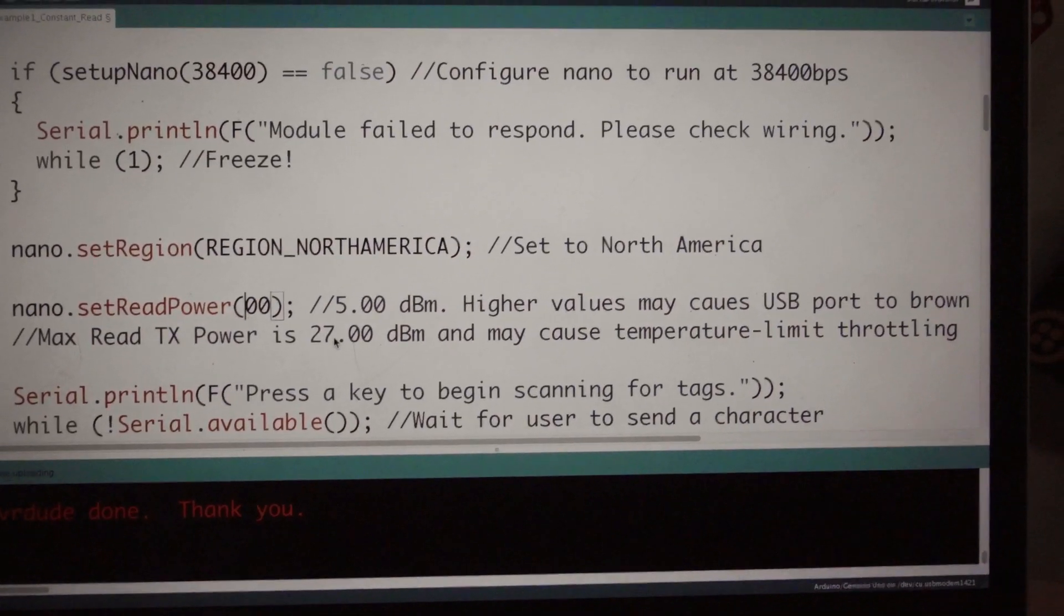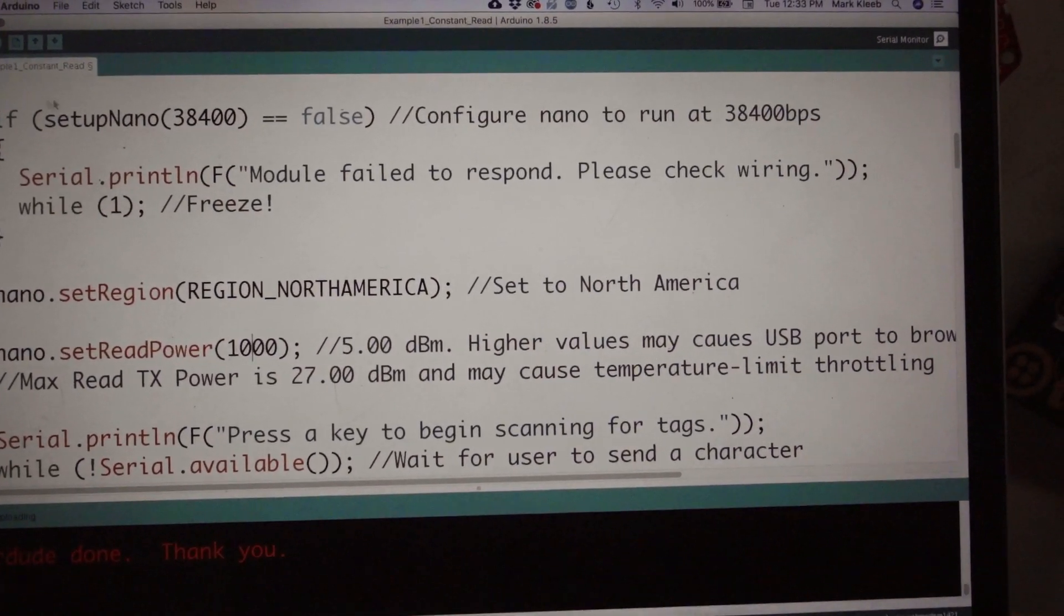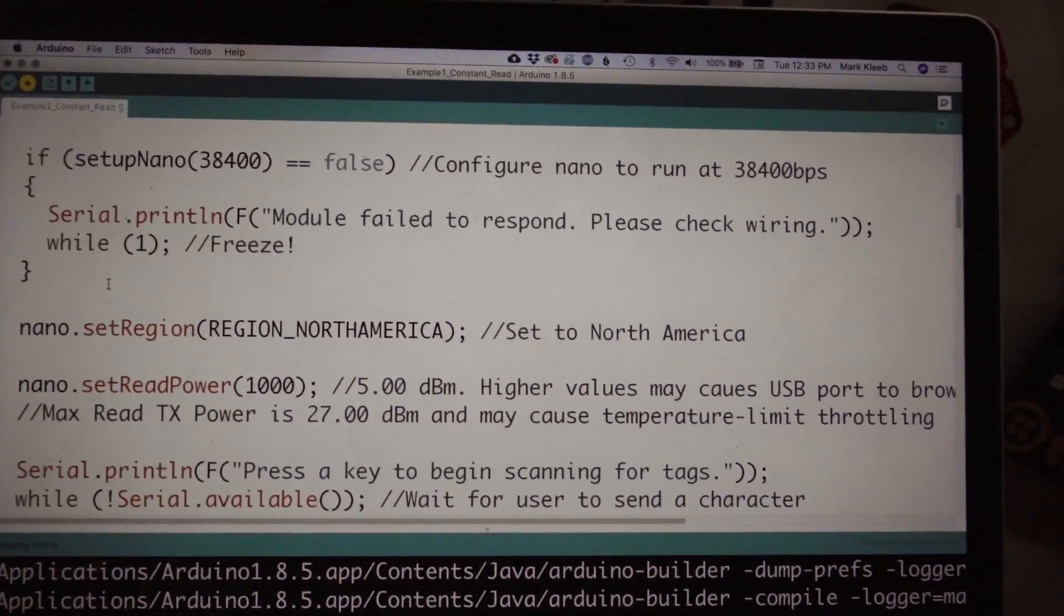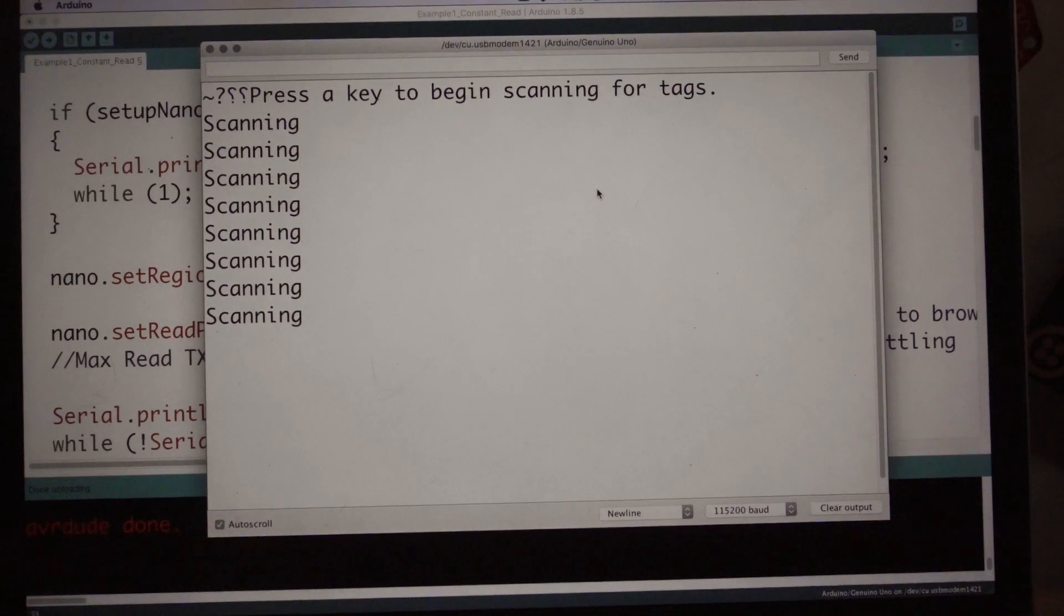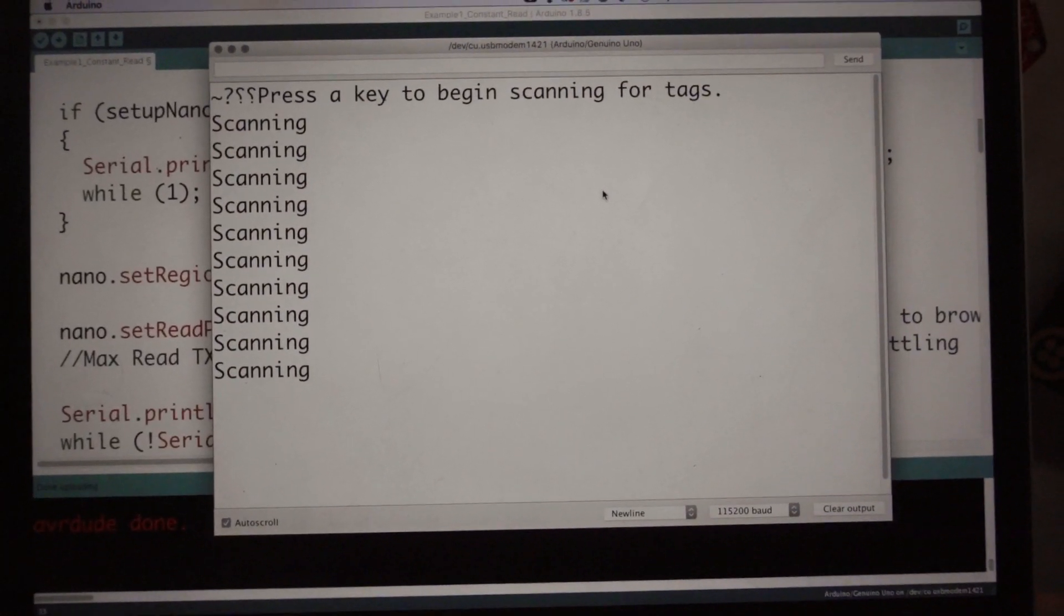And let's take this five decibels. And you know what? Let's just double it. We'll see what we get at 10. So I'm going to upload this code. If five decibels reads from two inches away, 10 decibels should theoretically work at four inches. Let's see how far away this will work.